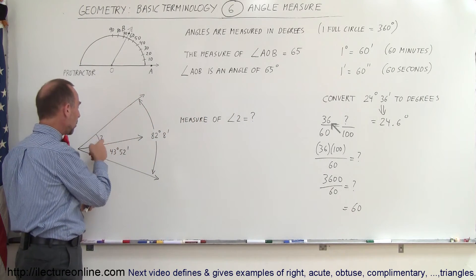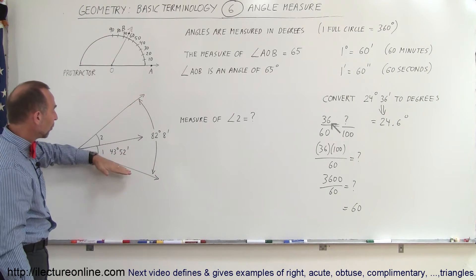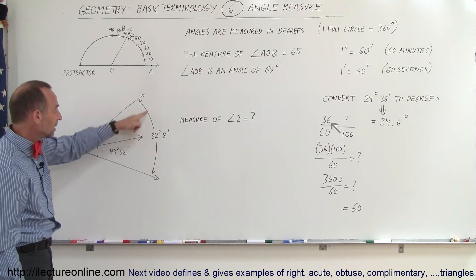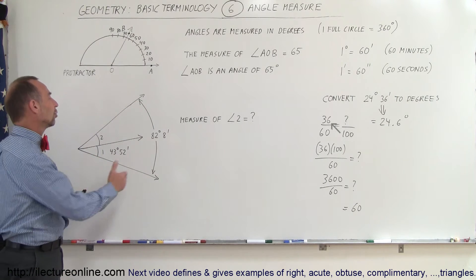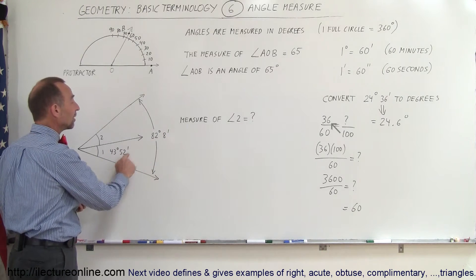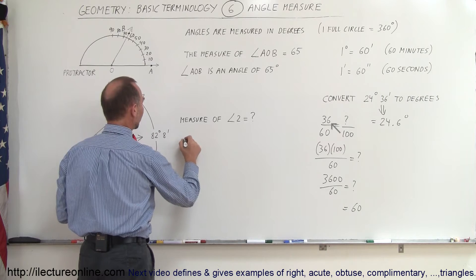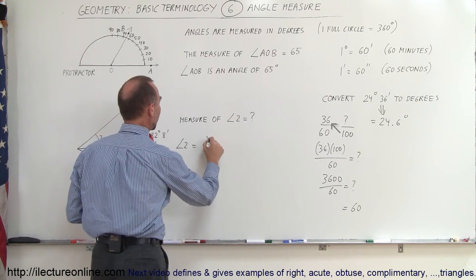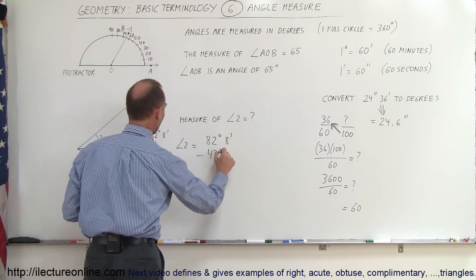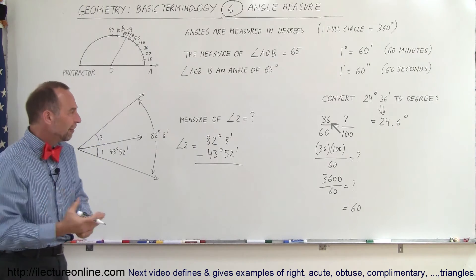Sometimes we're asked to find an angle — let's say we want to know the measure of angle 2. We're given the measure of angle 1 and the total measure from one side of angle 1 to the other side of angle 2. The measure of angle 2 would be the total minus angle 1. But here we have it in degrees and minutes, so how do we subtract — especially when we're subtracting 52 minutes from 8 minutes?